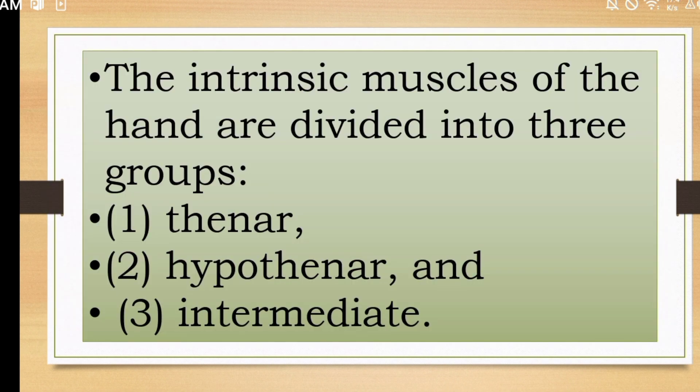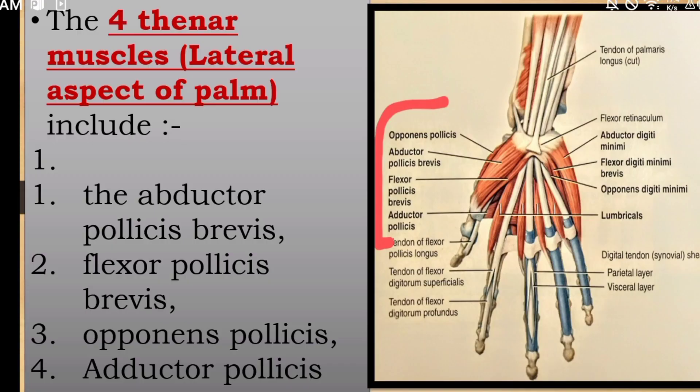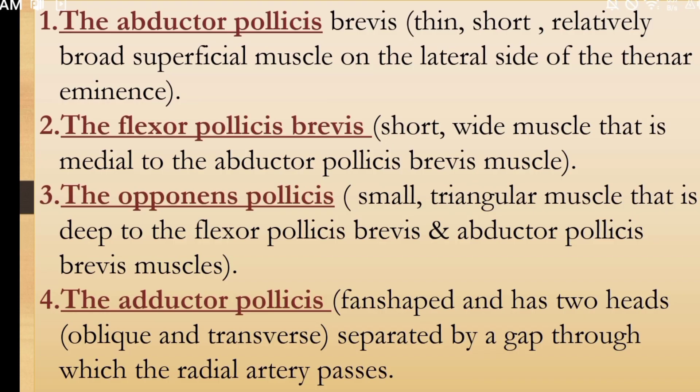In the class, the intrinsic muscles are three groups: thenar, hypothenar, and intermediate. Thenar muscles are four. This picture will show the position of the muscles.